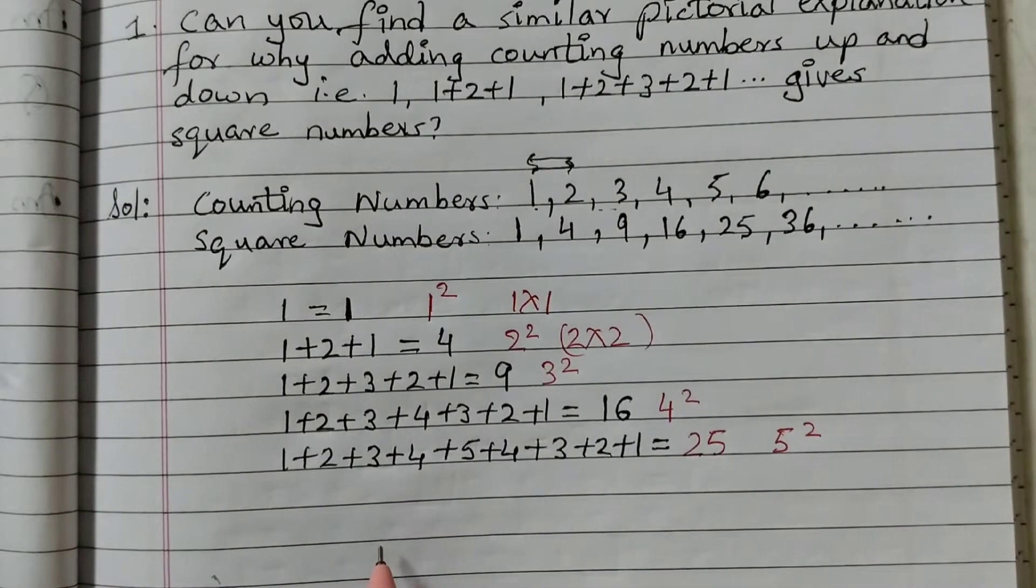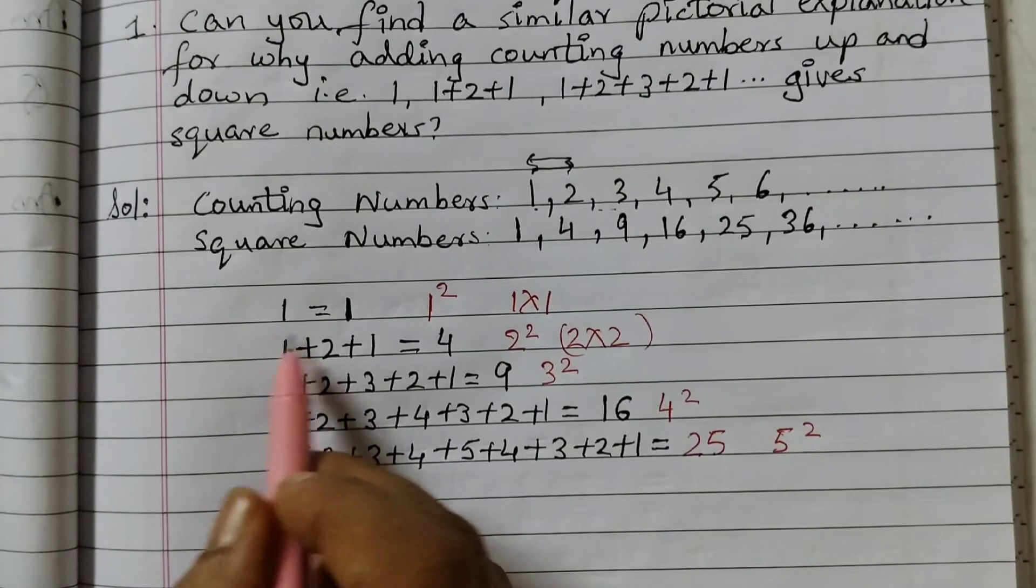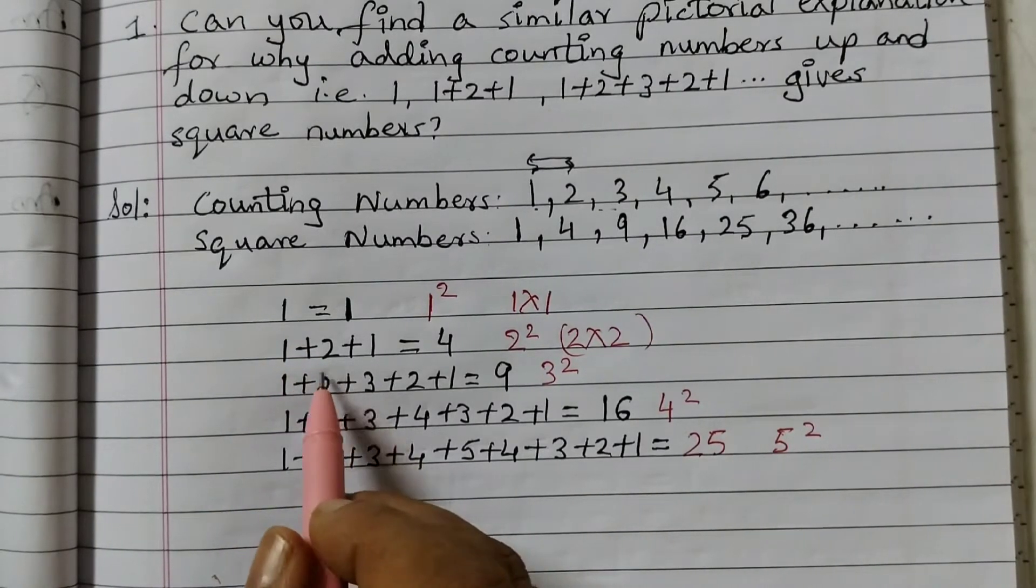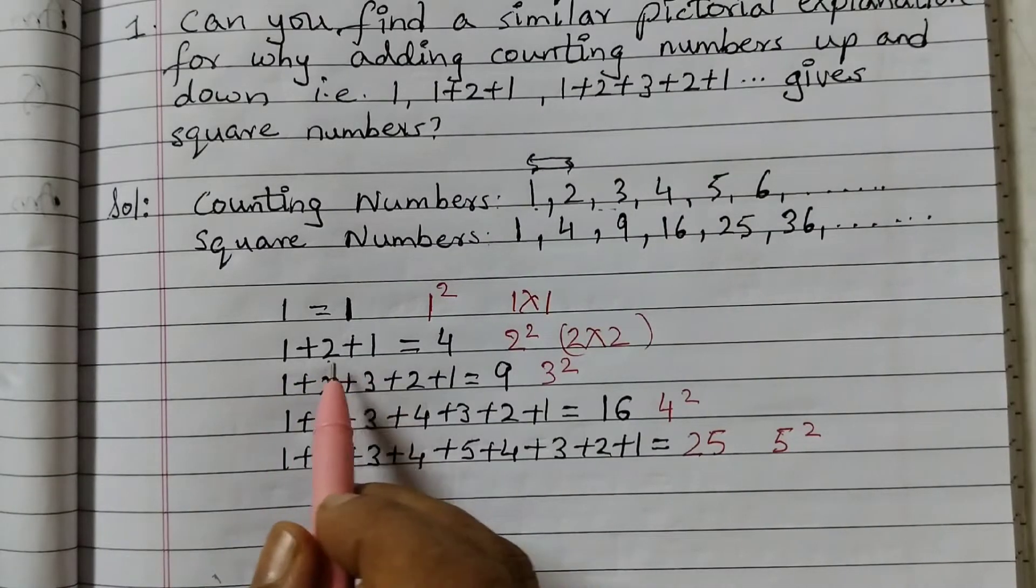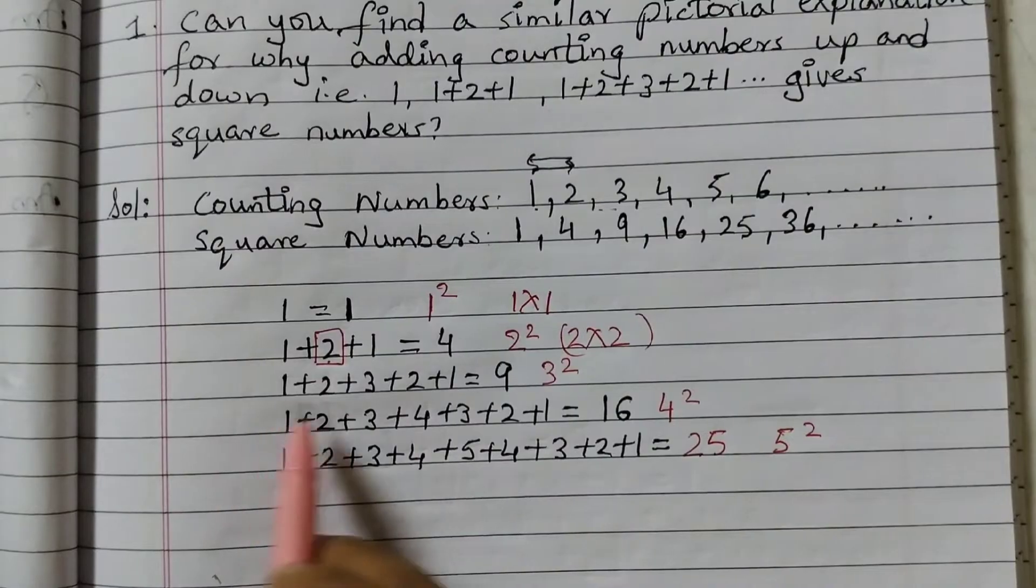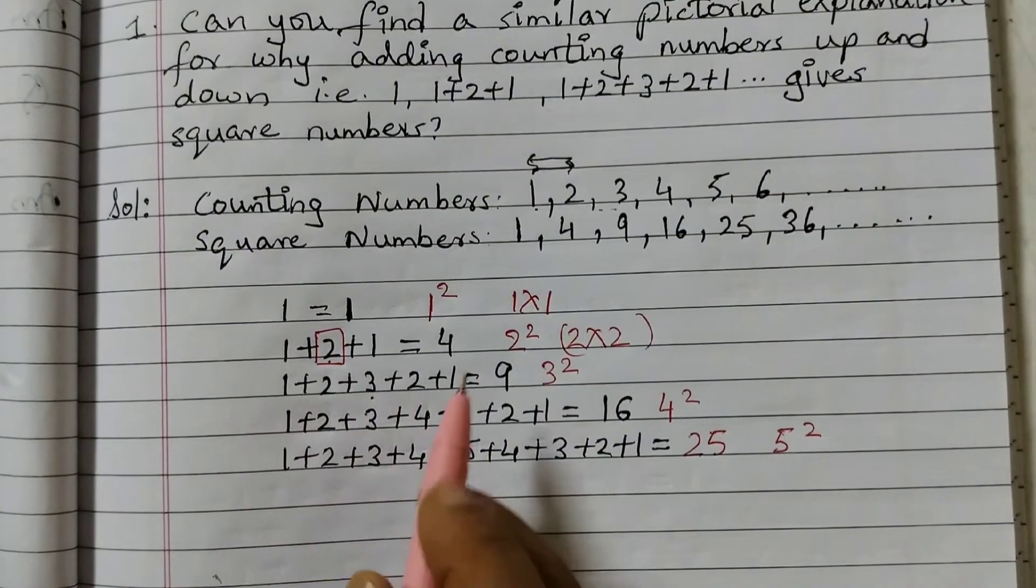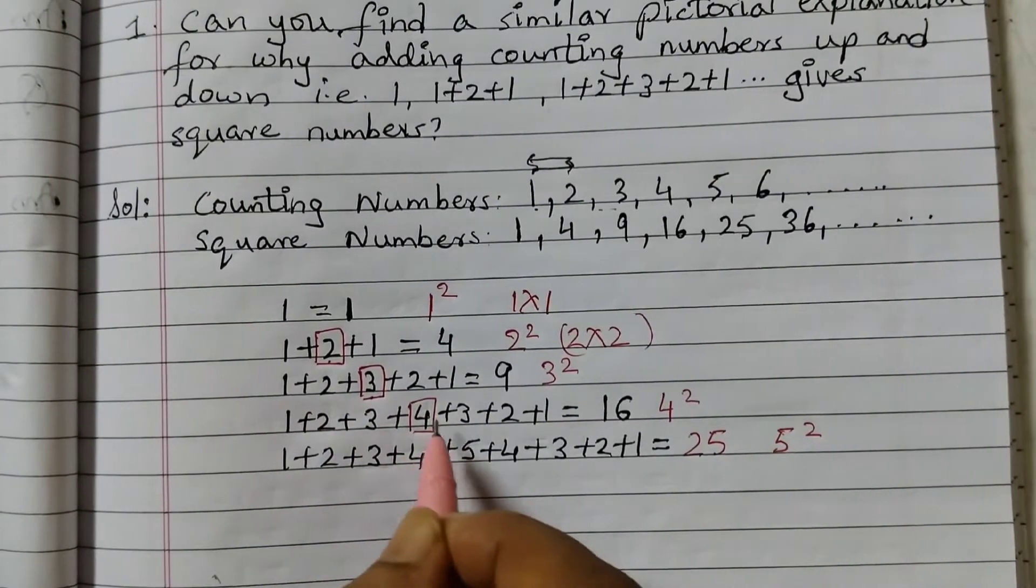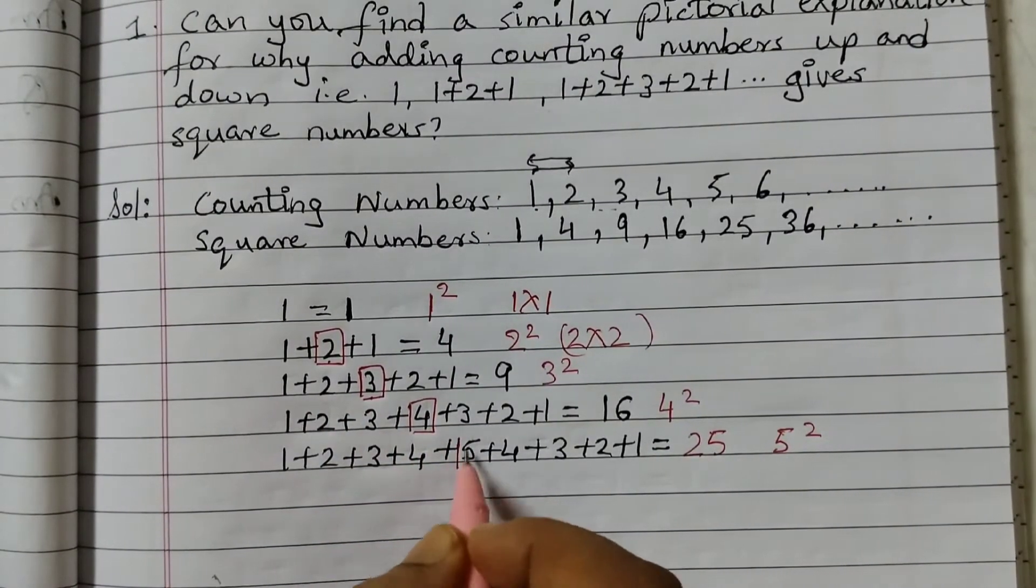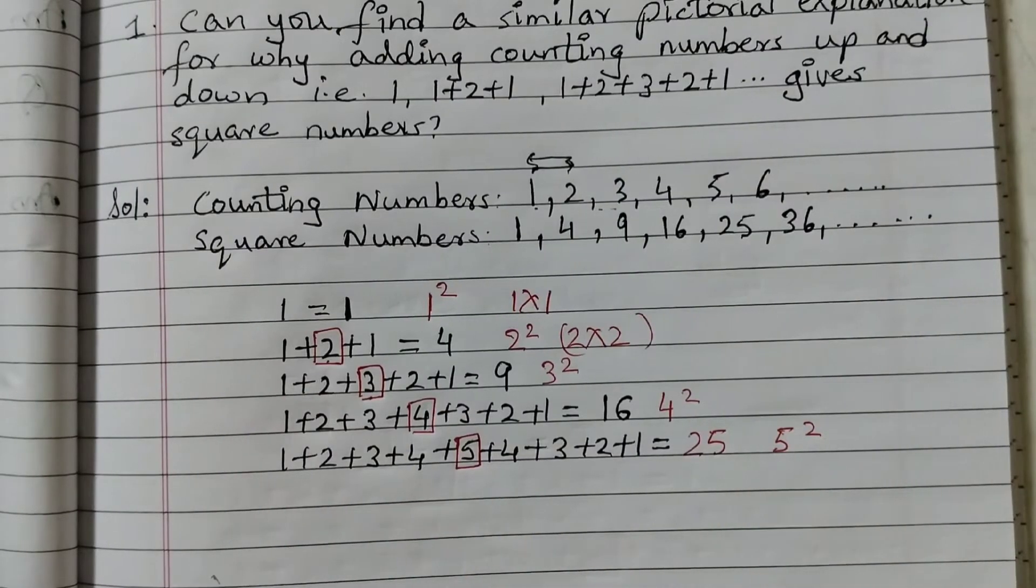So the pattern that is being followed here is, you just need to check the middle number. Like here, 1 single number, so there is no middle number. The second one, 2 is the middle number. Left hand side we have 1, here also 1. So you will take this number and square it. Then next one, 3 is the middle number. Here we have 1 plus 2, 2 plus 1. Square 3. Here square 4. Because 4 is the middle number. Here 5 is the middle number. So this is the biggest number also in this and the middle number and just square it. So that is the pattern.